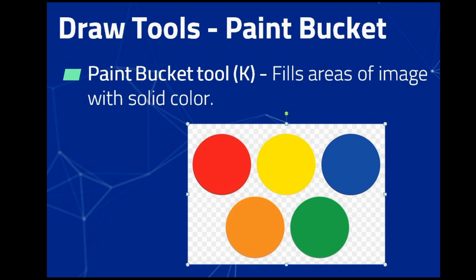The Paint Bucket tool is used to fill areas of an image with solid colors. In this example, we have filled circles with different colors like red, yellow, blue, orange, and green.